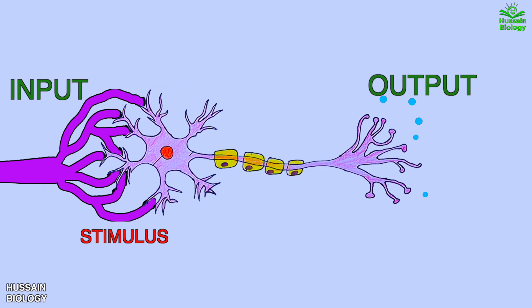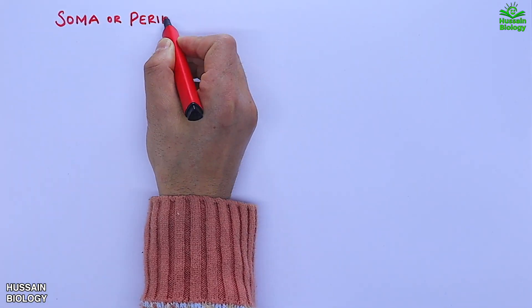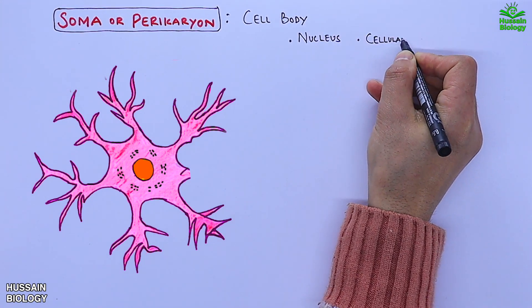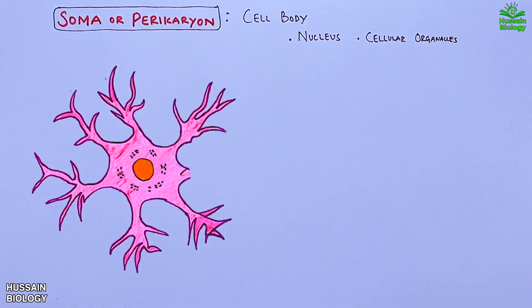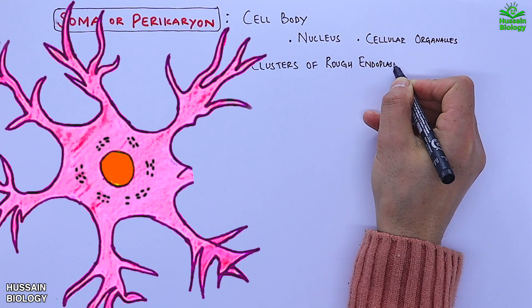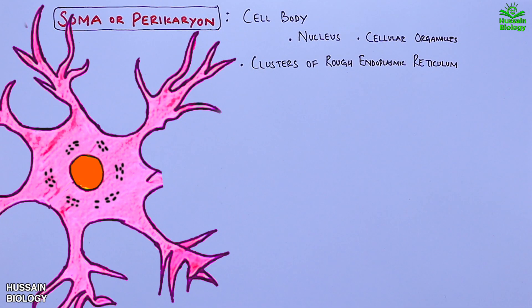The mechanism of the nerve impulse or action potential will be discussed in another part of the video. Now let's see some terms related to the structure of the neuron. First, we have the soma or perikaryon — that's the cell body. It contains the nucleus and all other cellular organelles. We also have clusters of rough endoplasmic reticulum present in the cell body, termed Nissl bodies.